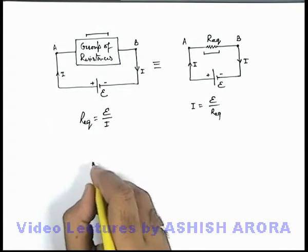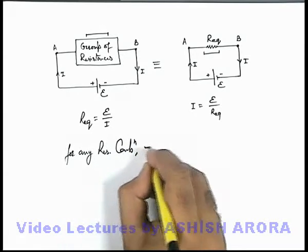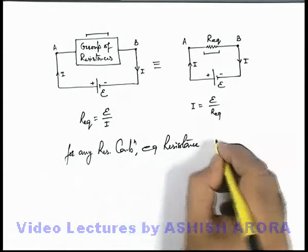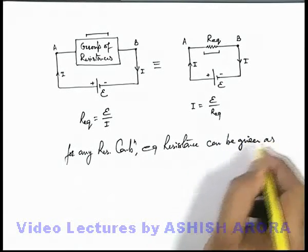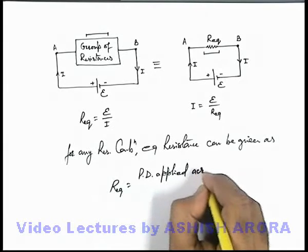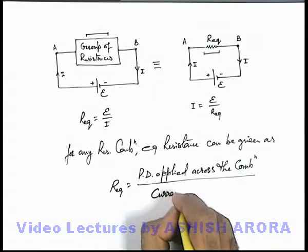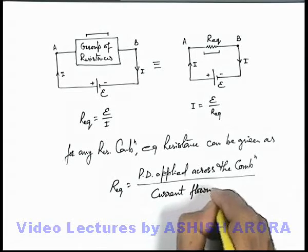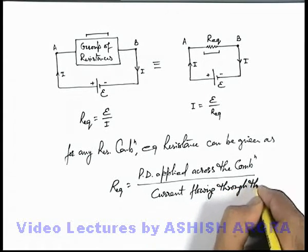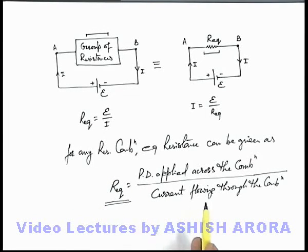So just keep this in mind that for any group or for any resistance combination, equivalent resistance can be given as the potential difference applied across the combination divided by the current flowing through the combination of resistances. This is the way how we can directly calculate the equivalent resistance for any group of resistances. Based on the same logic we are going to analyze the series and parallel combination and their equivalent resistances in coming sections.